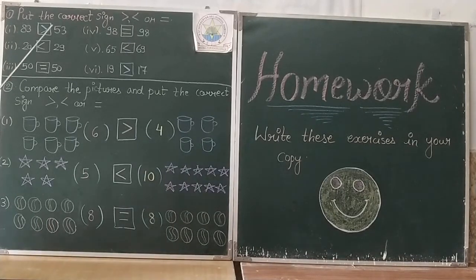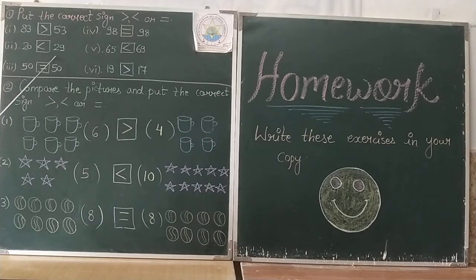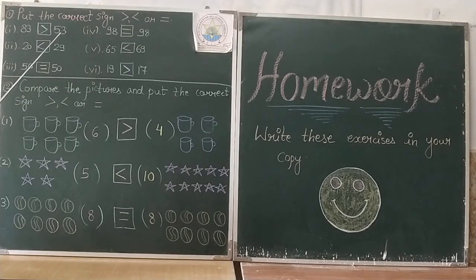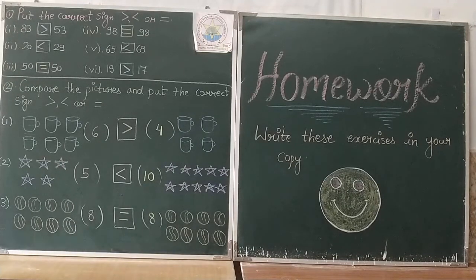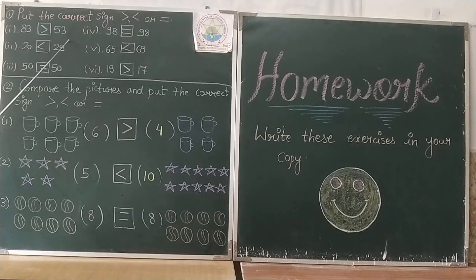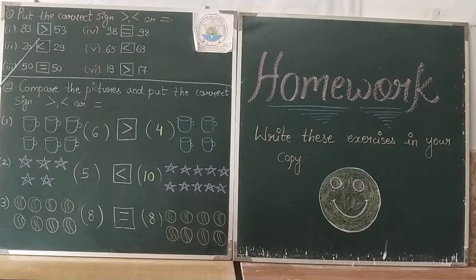Now let's go through the exercises. Question number one: put the correct sign. अब यहाँ पर numbers लिखे हुए हैं, आपको इनको compare करना है और correct sign put करना है। जो number बड़ा होता है, उसके सामने sign का mouth open होता है — खुला हुआ होता है — और जो number छोटा होता है, उसका mouth वहाँ पर close होता है।